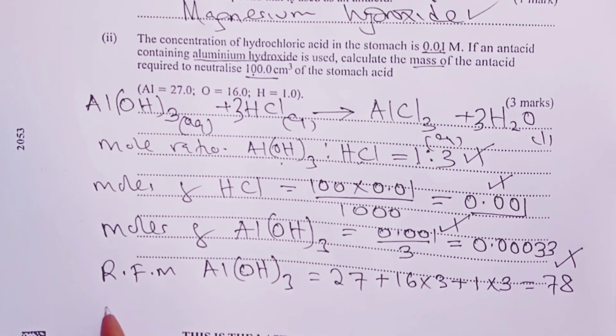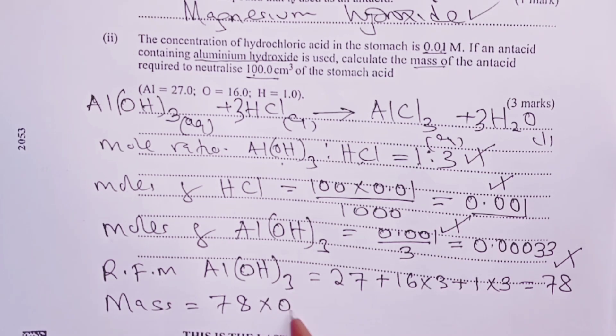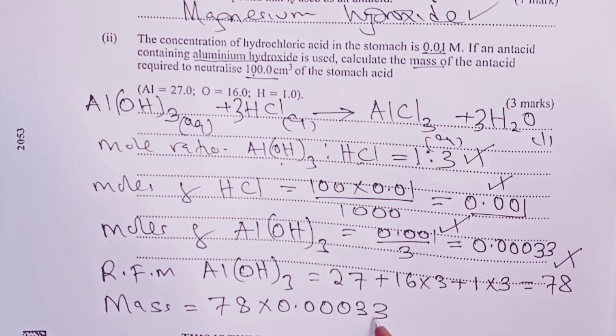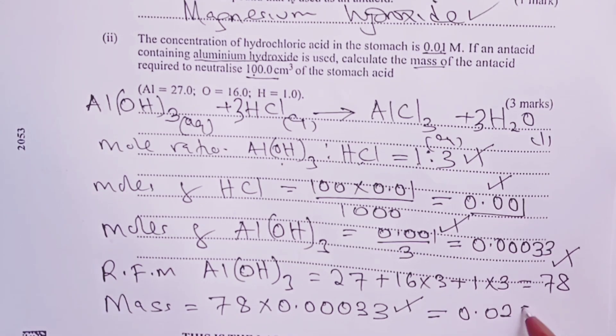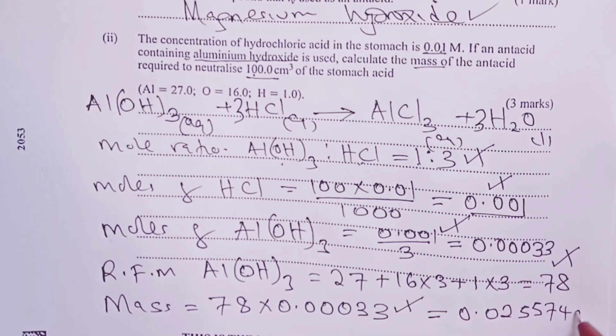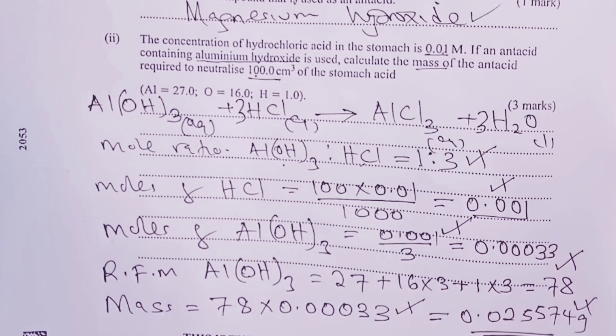Finally, to get mass, we shall multiply the relative formula mass by the number of moles that are there. So 78 × 0.00033 for the next half mark. And this gives us a mass of 0.025574 grams for the last half mark.